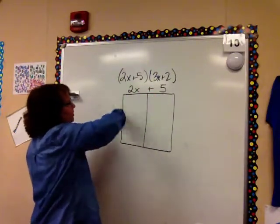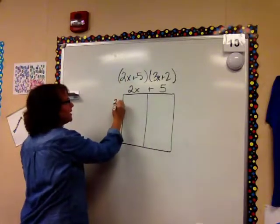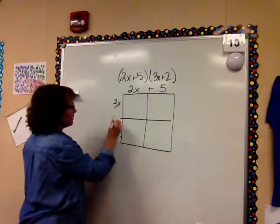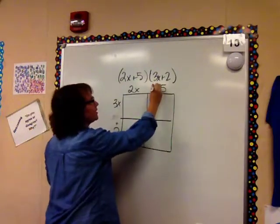And then I'm going to label my width as 3x plus 2. I'll just go ahead and put that plus width of the 2 over here and the plus width of the 5.